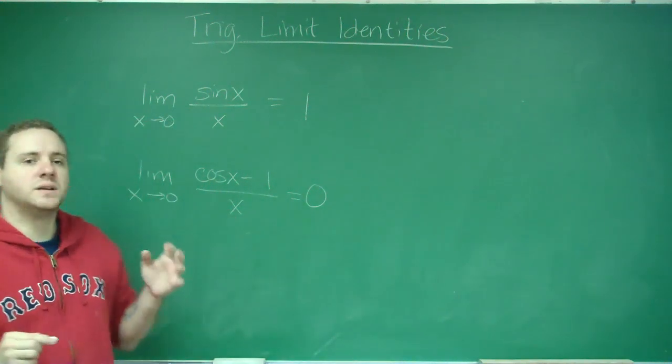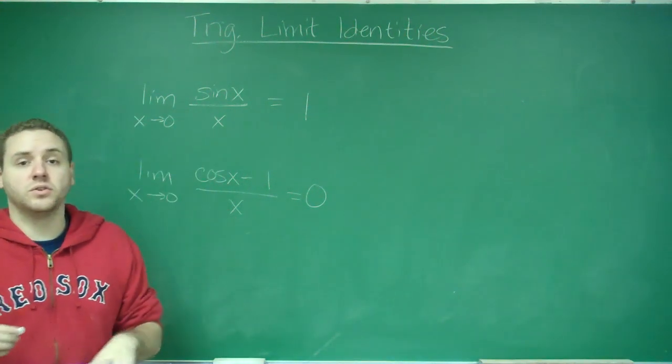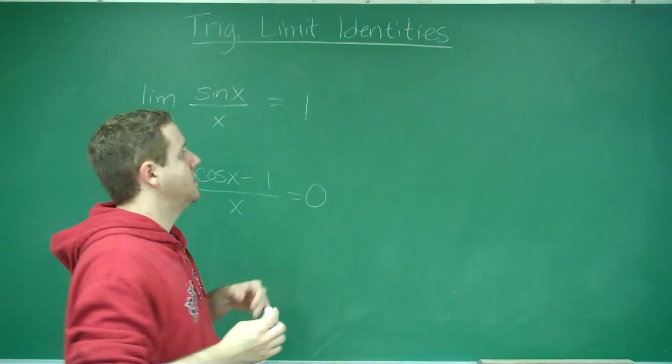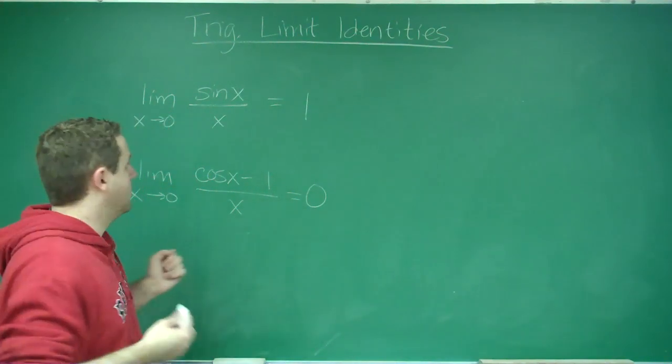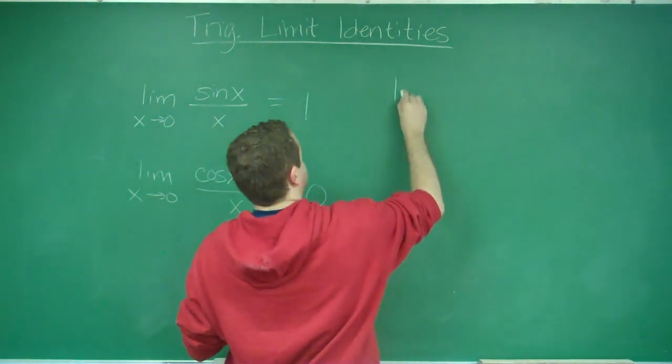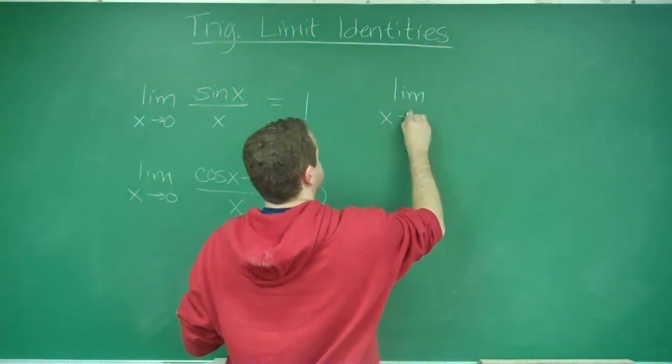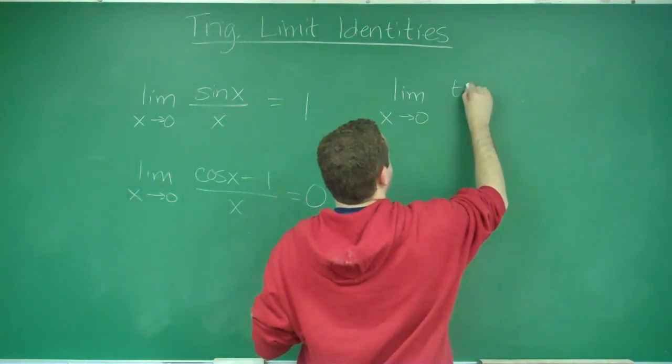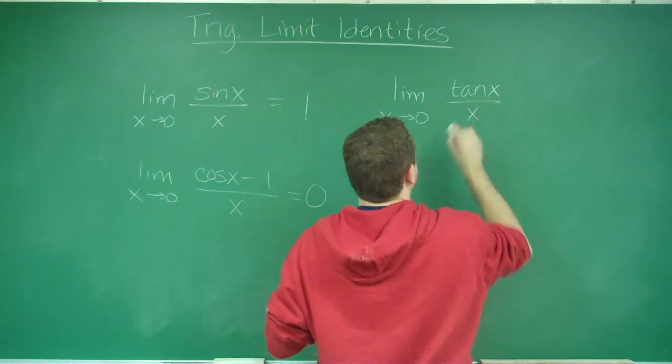Now, I want to show you how using this one you can also get a third identity that you might be asked to show, and it's not very difficult. What is the limit as x approaches 0 of tan x over x?